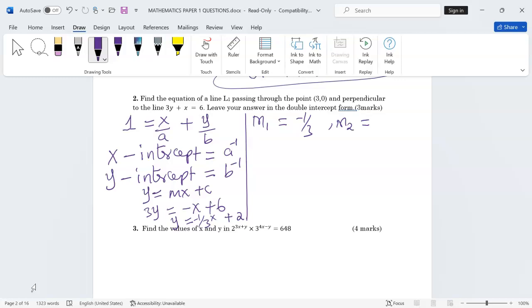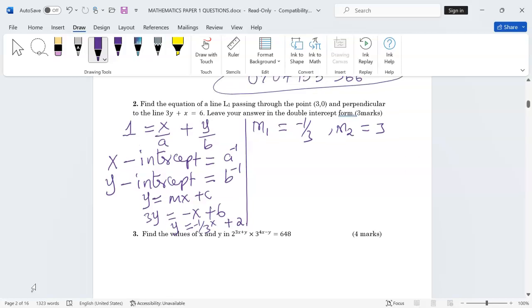For the second gradient m2, when multiplied they should give us -1 since they are perpendicular. For two perpendicular lines, their gradients should give a product of -1. Then that gradient will be 3, the reciprocal of the first gradient with the opposite sign.